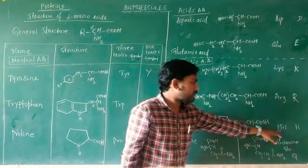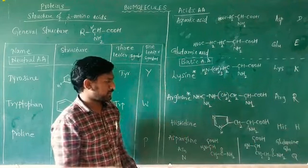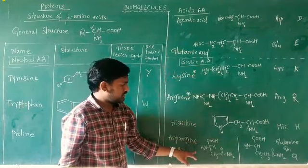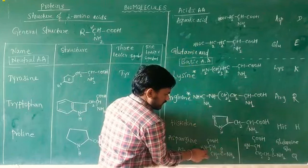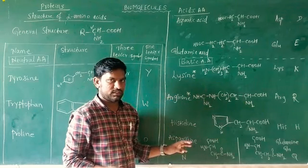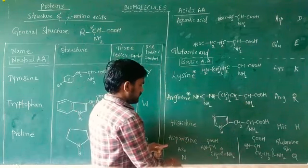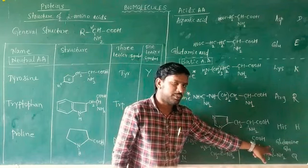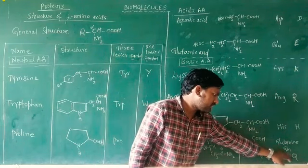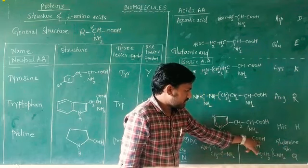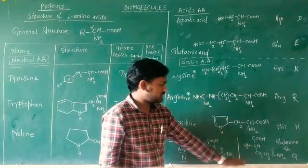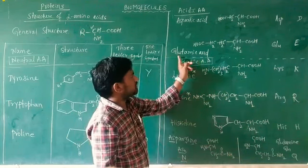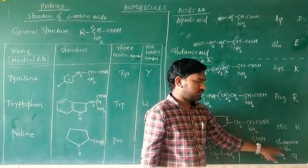Glutamine is also a basic amino acid. Three-letter symbol is GLN and one-letter symbol is Q. It has one acidic group and two basic groups, making it a basic amino acid. Note that glutamic acid is an acidic amino acid, while glutamine is a basic amino acid — they are different.